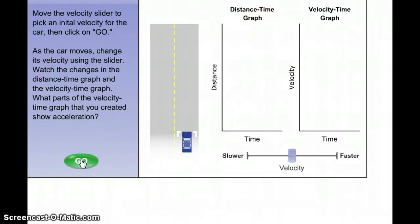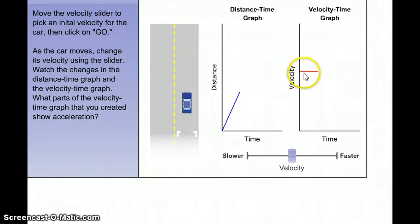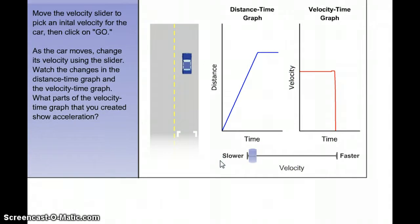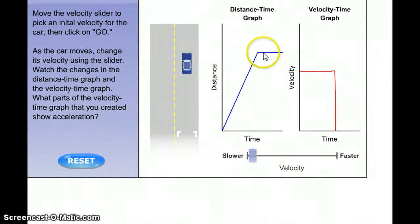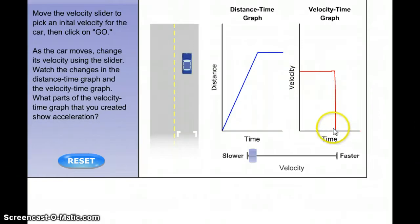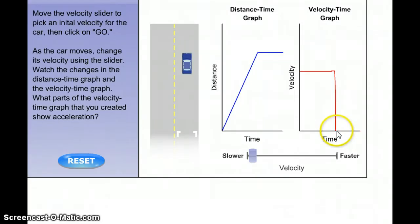Watch what happens when I stop the car completely. On a velocity-time graph, this shows the car going maybe 30 miles an hour, and then I stop it. Notice how the distance did not increase, but the time kept going. The velocity-time graph showed that the car stopped, meaning the speed went all the way down to zero. The line on the x-axis would have still been going, showing that time was increasing, but the speed was zero.